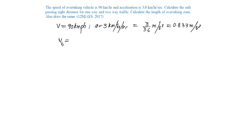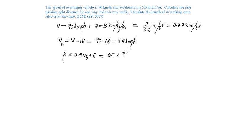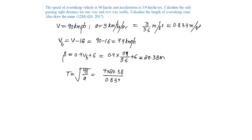The speed of the overtaken vehicle VB is V minus 16 kmph, so 90 minus 16 equals 74 kmph. The spacing s is 0.7 VB plus 6, where VB is in meter per second: 0.7 into 74 by 3.6 plus 6, which gives 20.38 meters. The time T is the square root of 4s divided by acceleration: root of 4 into 20.38 divided by 0.833, giving 9.89 seconds.